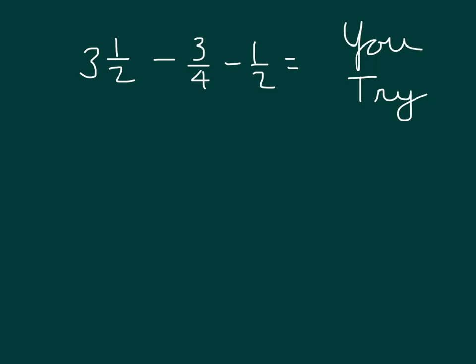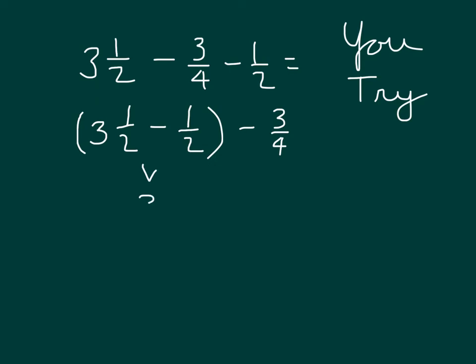Okay, your turn to try. Here's 3 and 1 half minus 3 fourths minus 1 half. Remember to group like units. Did you group 3 and 1 half with 1 half? In this case, we're still subtracting, and we're subtracting 3 fourths. 3 and 1 half minus 1 half is 3, and then subtracting 3 fourths gives us 2 and 1 fourth.